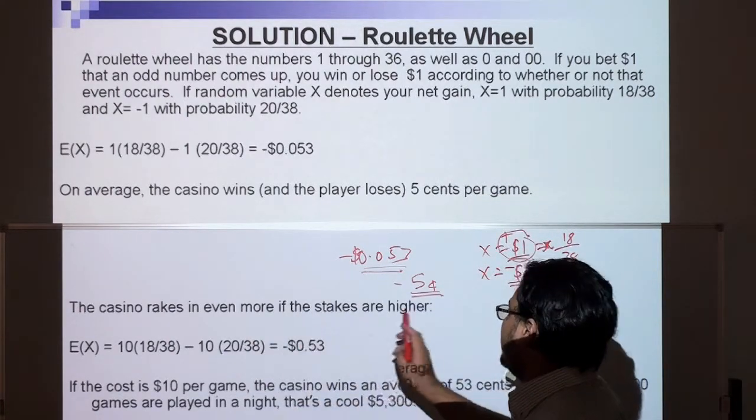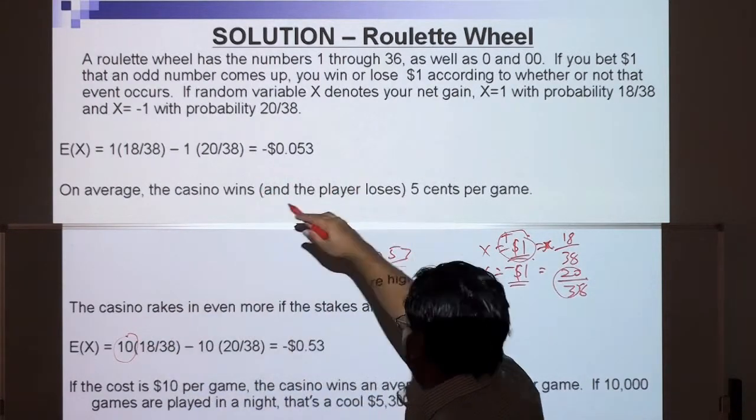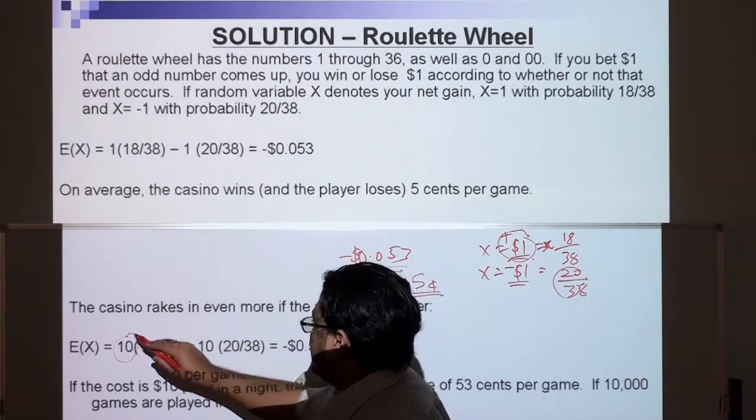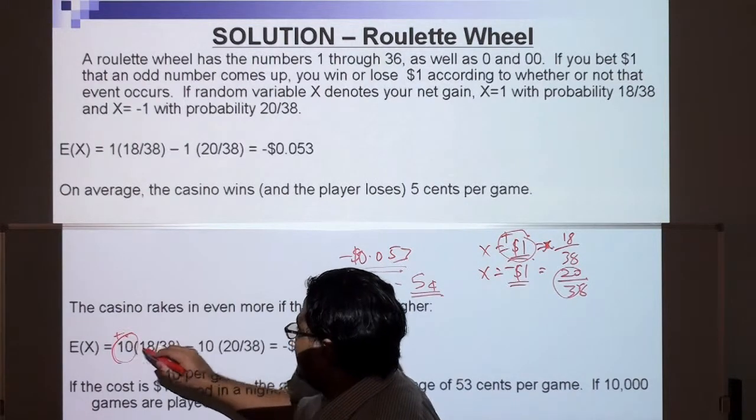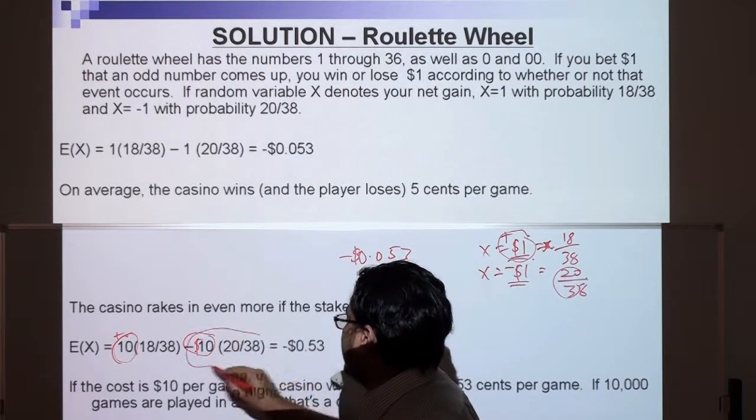Now the casino rakes in even more money if the stakes are higher. So here, instead of $1 per game, we have $10, so your chance of winning $10 is 18 over 38, and the chances of losing $10 is 20 over 38.